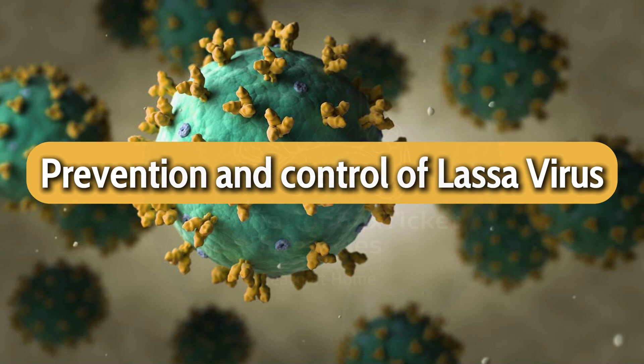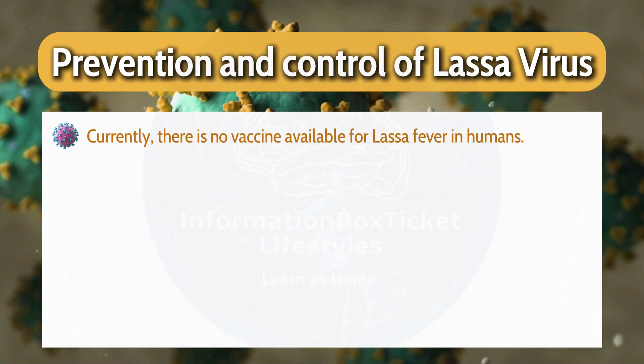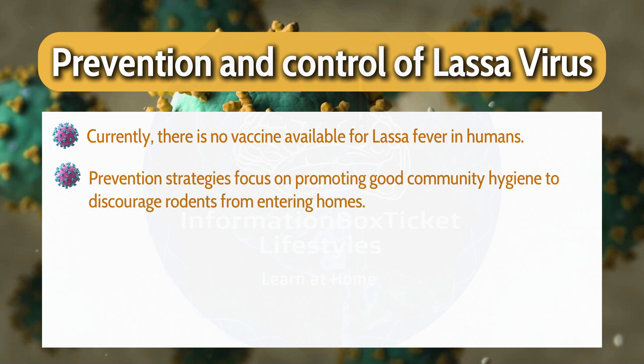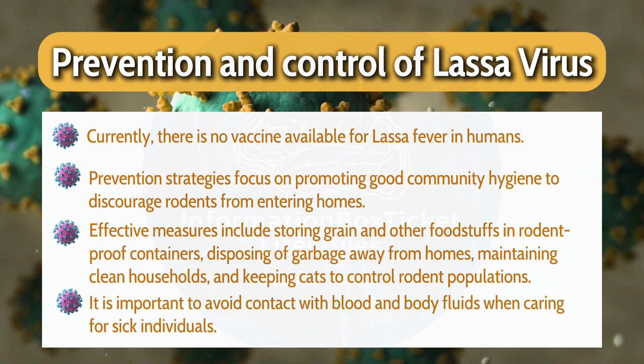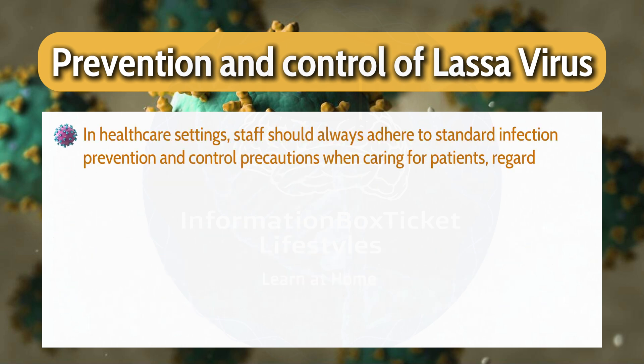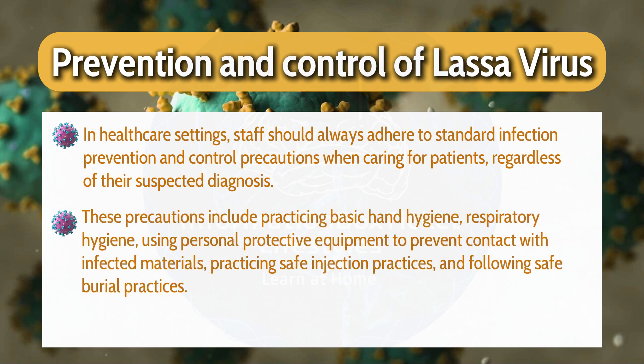Prevention and Control of Lassa Virus. Currently, there is no vaccine available for Lassa fever in humans. Prevention strategies focus on promoting good community hygiene to discourage rodents from entering homes. Effective measures include storing grain and other foodstuffs in rodent-proof containers, disposing of garbage away from homes, maintaining clean households, and keeping cats to control rodent populations. It is important to avoid contact with blood and body fluids when caring for sick individuals. In healthcare settings, staff should adhere to standard infection prevention and control precautions, including basic hand hygiene, respiratory hygiene, use of personal protective equipment, safe injection practices, and safe burial practices.